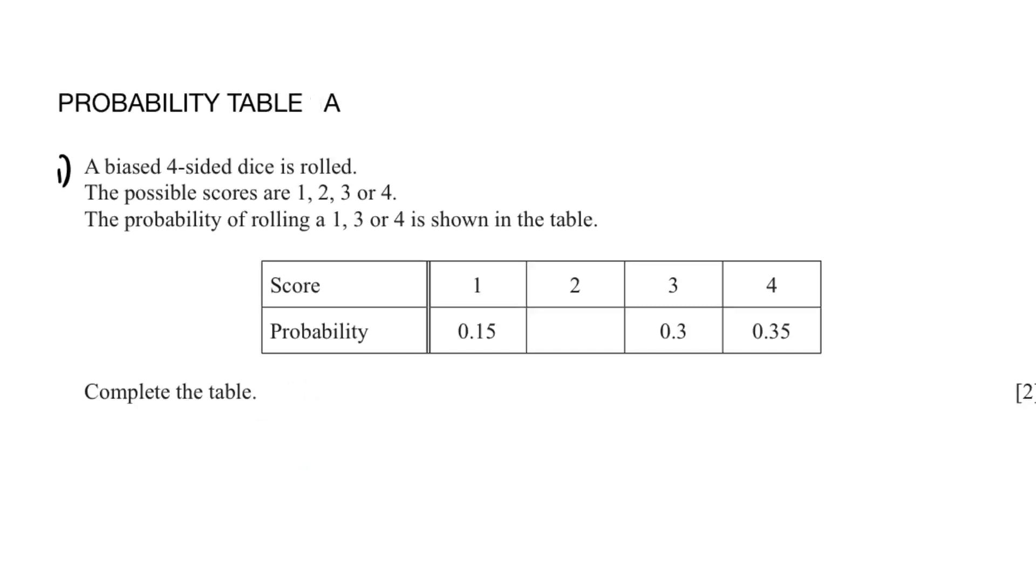You should know that when you add the probabilities it should equal to 1. So probability of 1, 2, 3, and 4 when we add them should equal to 1. Therefore we do 1 minus these numbers. It will give us the probability of 2 and that is 0.2. So the answer is 0.2.